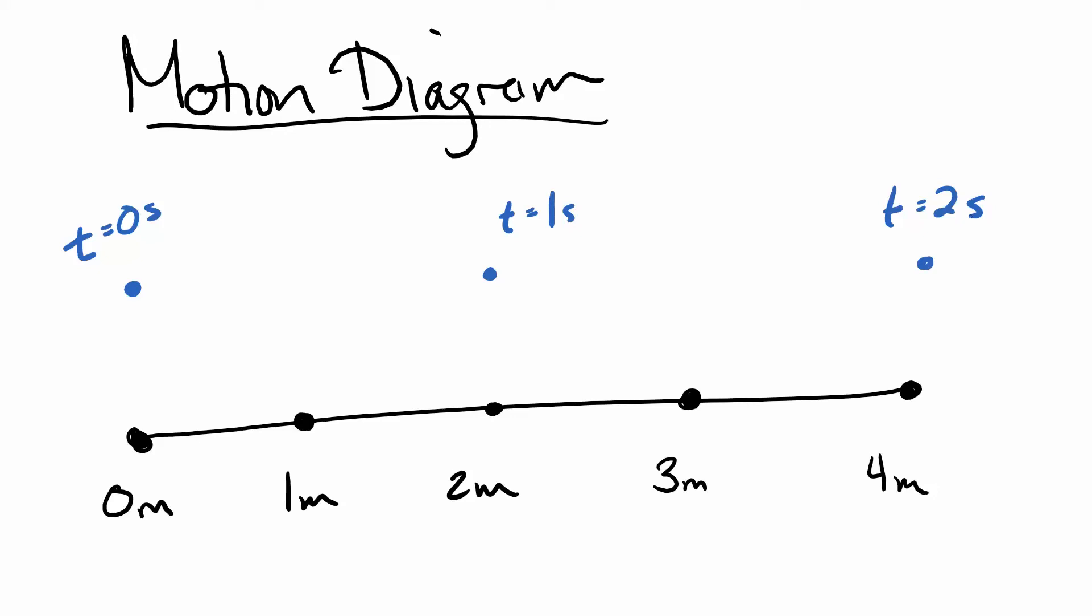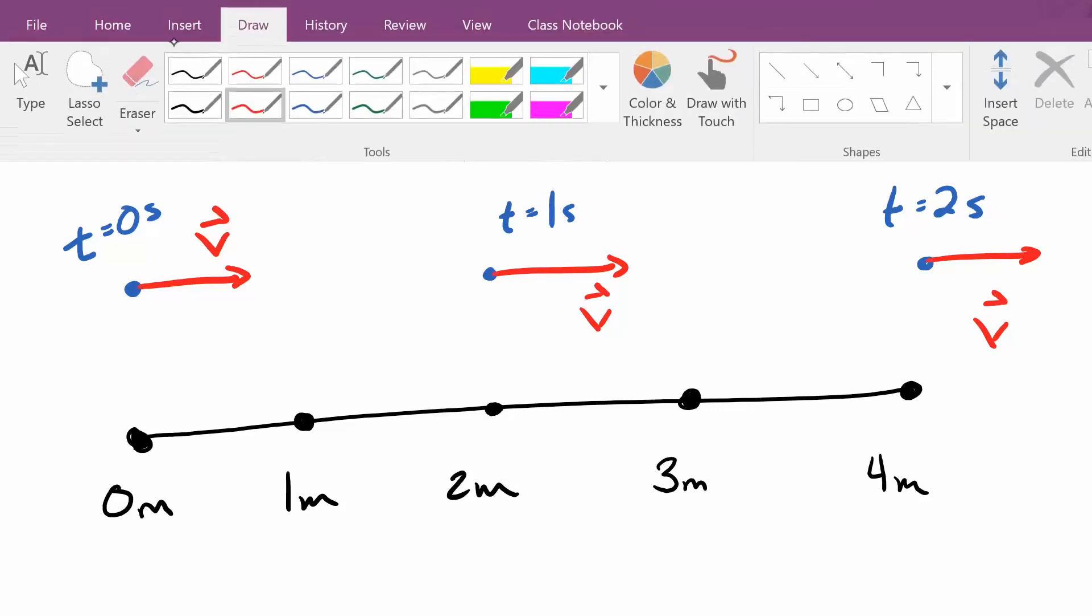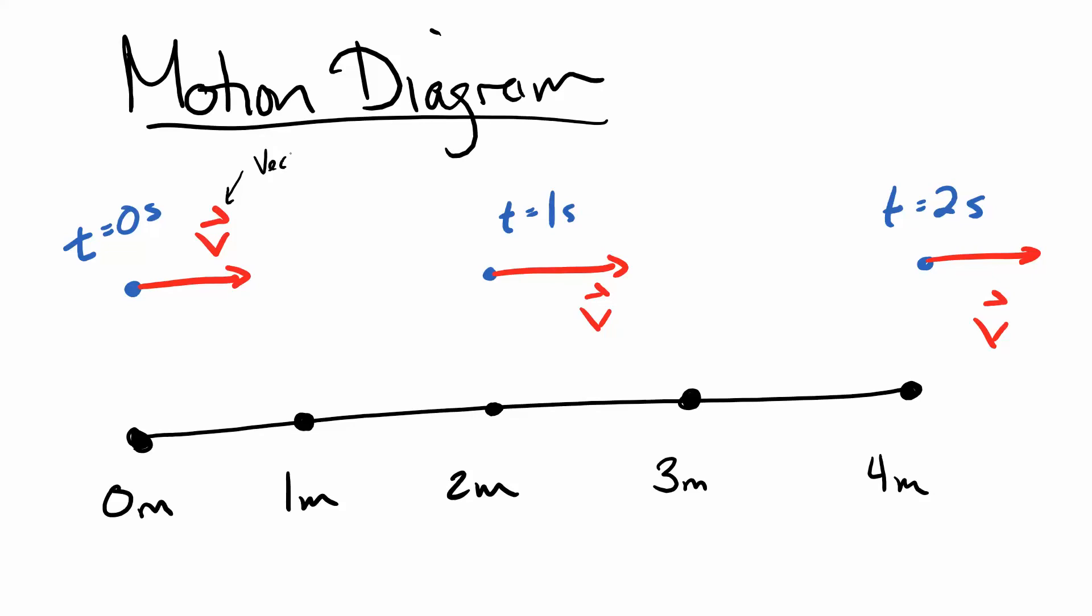I see someone here who is moving to the right as I've drawn it. At zero seconds, they're at the zero meter marker. At one second, they're at the two meter marker. At two seconds, they're at the four meter marker. I might further represent this person as having a velocity, which I'm going to represent as this arrow, and then label it with a v with an arrow to remind me that this velocity has a magnitude and a direction. It is what we call a vector quantity. So this arrow thing tells me that I'm looking at a vector, something that has magnitude, size, and direction.